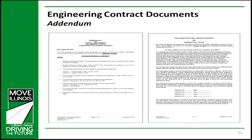Sometimes revisions to the contract documents are required after advertisement but before bids are opened — this is called an addendum. This information is sent out to plan holders via the tollway's online plan room. The tollway typically will issue an addendum no less than 3 days before bids are due. The bidder must acknowledge receipt of the addendum by listing the addendum number and date on their copy of the P-1 page in order for their bid to be accepted.